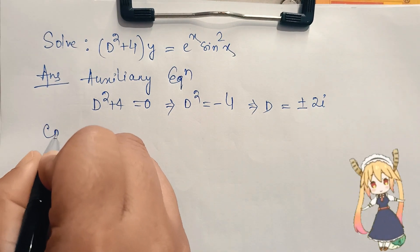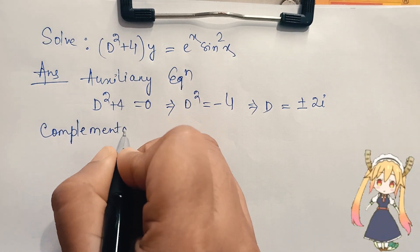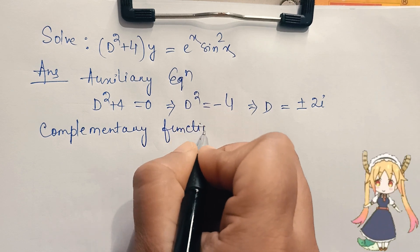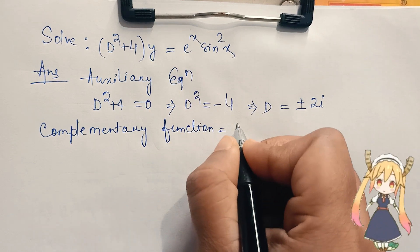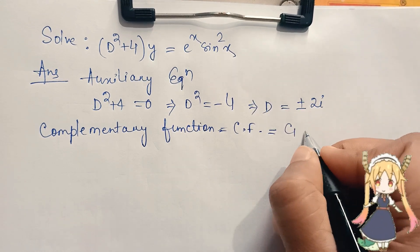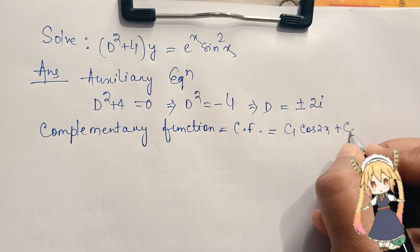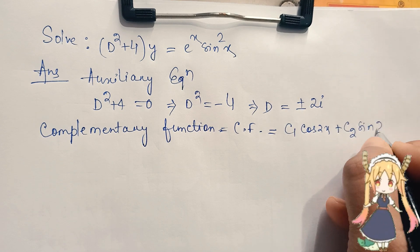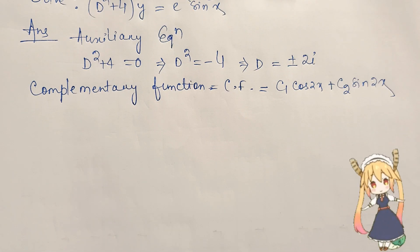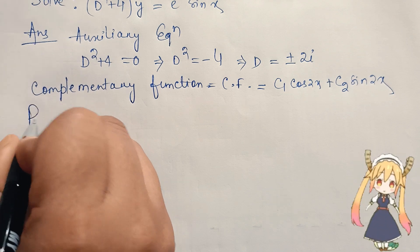Since D = ±2i, the complementary function (CF) becomes CF = c₁cos2x + c₂sin2x. This is the complementary function. Now we will proceed to find the particular integral (PI).